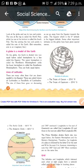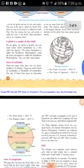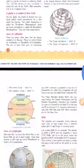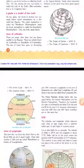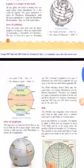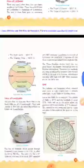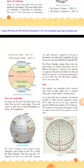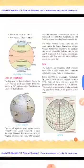The Tropic of Capricorn is at 23 and a half degrees south. The Arctic Circle is at 66 and a half degrees north, and the Antarctic Circle is at 66 and a half degrees south.